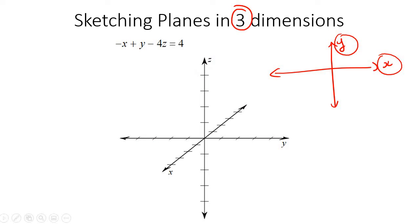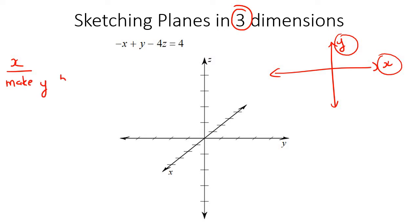Okay, how do we draw a plane? It's very easy. You need to find the x point, you need to find the y, and you need to find the z. To find the x point, you're going to make y and z equal to zero. So you're going to go to the y and the z and literally just replace them with a zero.